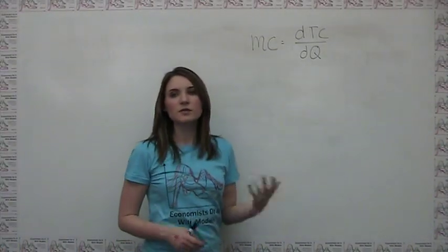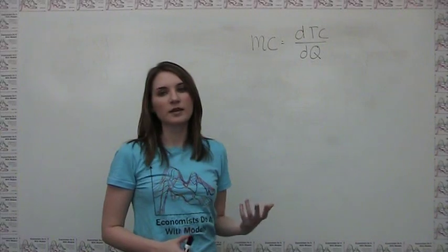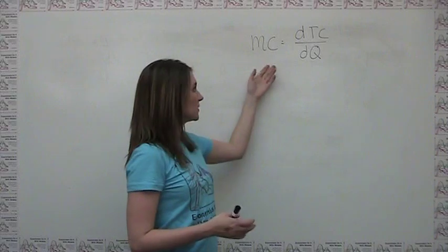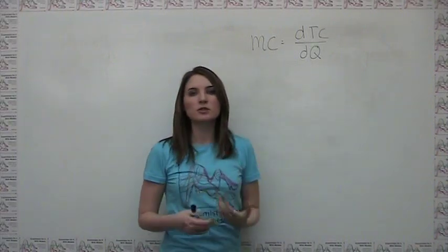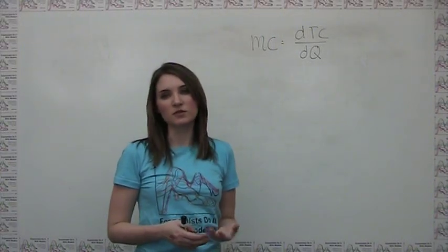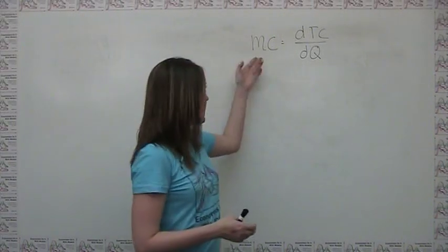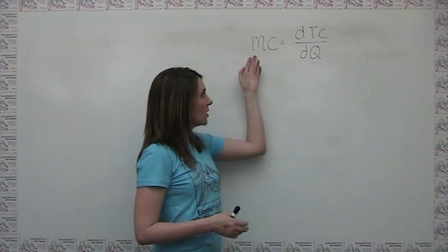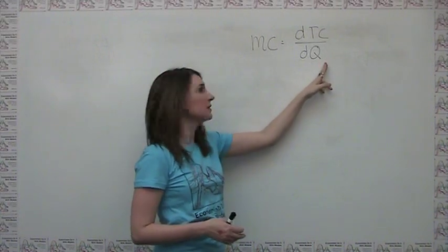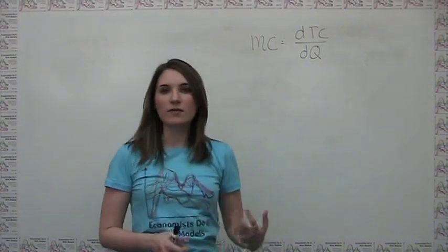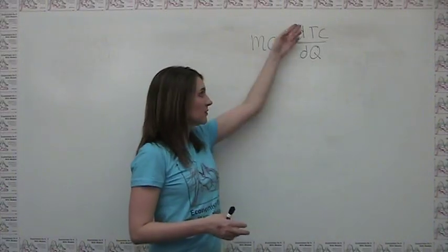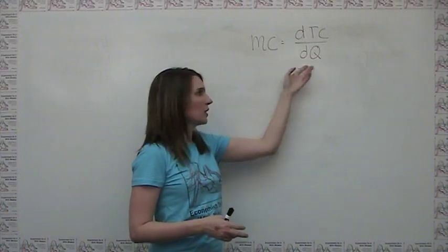For those who are mathematically inclined, it's worth noting that as smaller and smaller changes in quantity are considered and these changes become continuous, the marginal cost calculation approaches the derivative of total cost with respect to quantity. Technically speaking, marginal cost is the derivative of total cost with respect to quantity. In general, whenever we're talking about marginal something, that marginal something is just the derivative of that total something with respect to quantity.